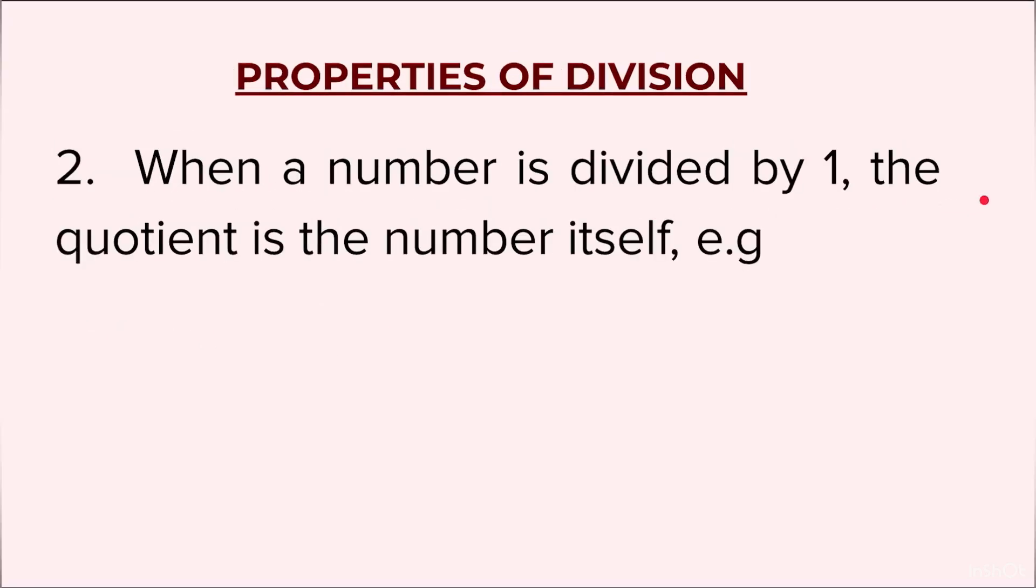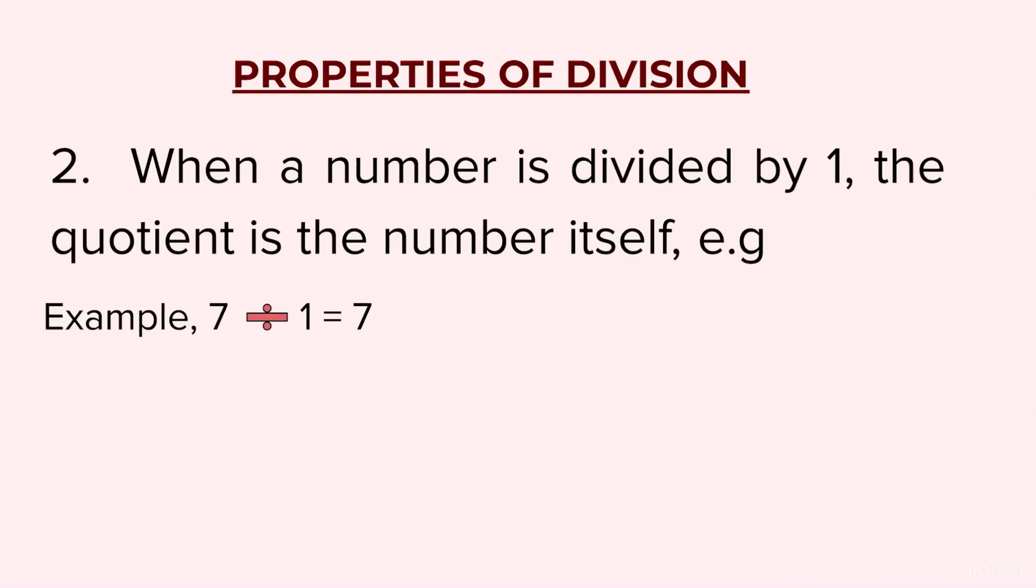Second property: when a number is divided by 1, the quotient is the number itself. Example: 7 divided by 1 is equal to 7. Here, the divisor is 1. So whenever the divisor is 1, the dividend and the quotient will be the same numbers. It could be 8 divided by 1 or 27 divided by 1. Whatever number we have taken initially, the same number will be the quotient. If it is 24 divided by 1, the quotient will be 24.